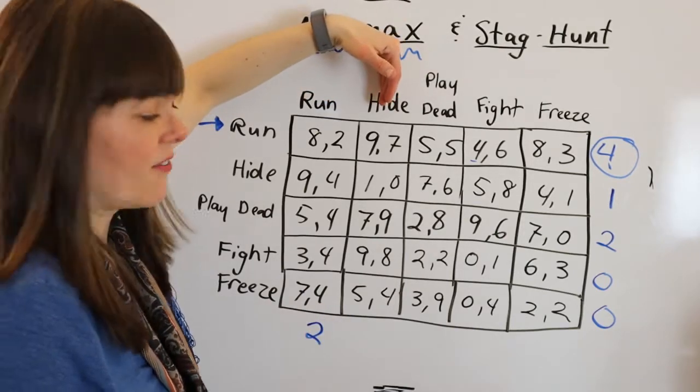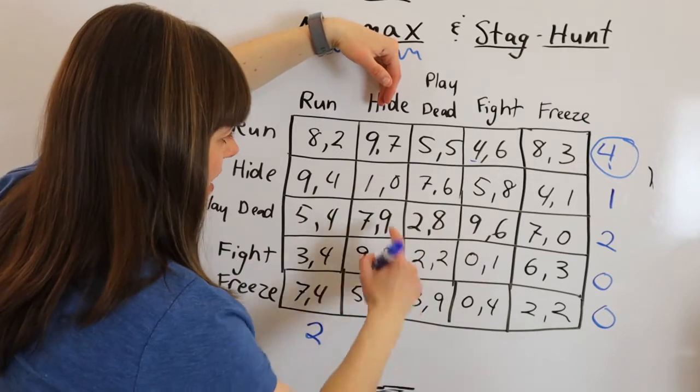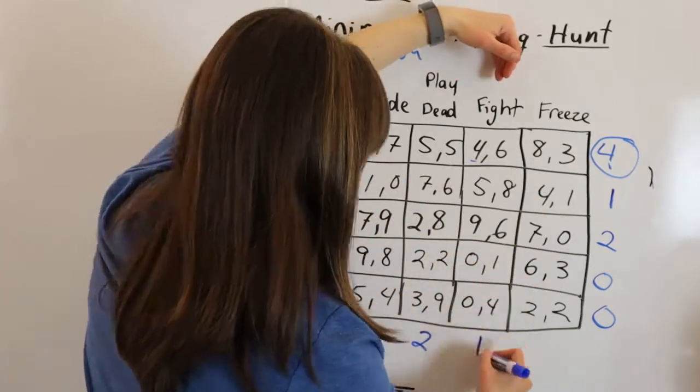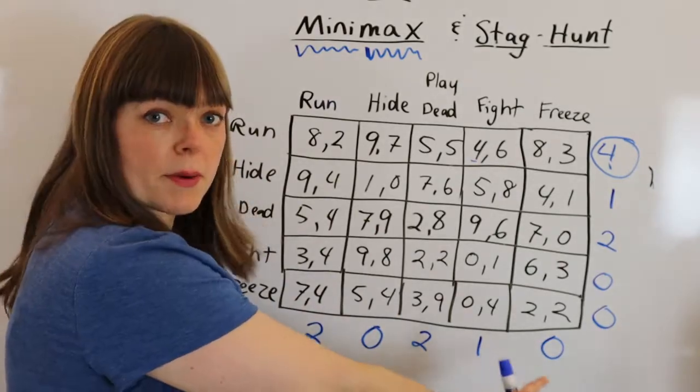They ask themselves, if I hide, what's the worst that could happen? And that's to get 0. And so for player 2, here are the minimums for player 2, and there's actually 2 possible minimax solutions here.